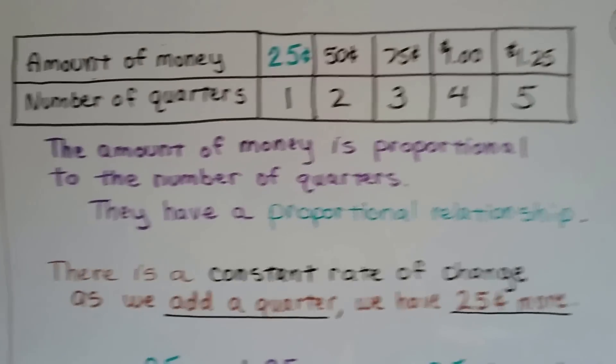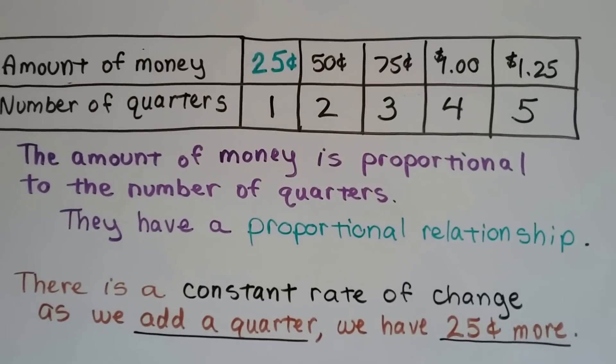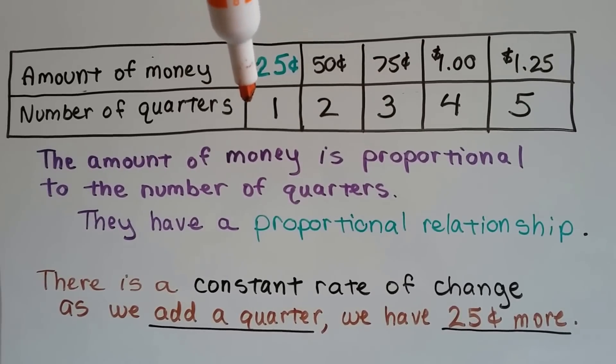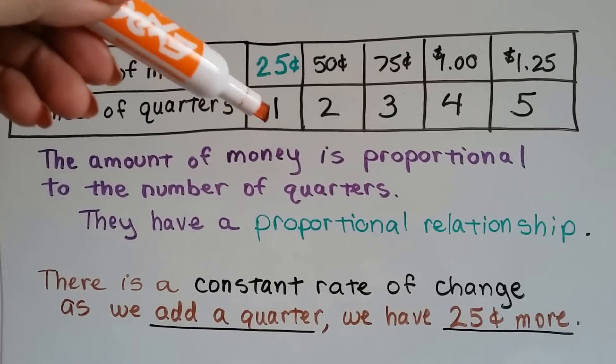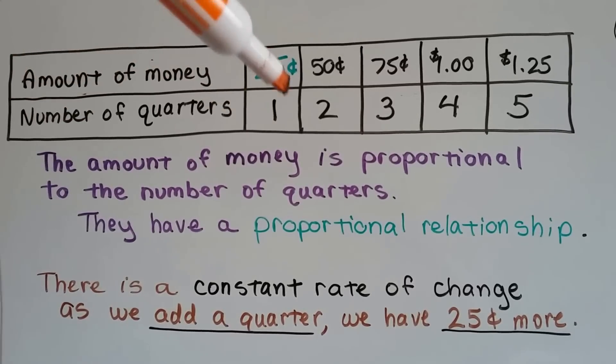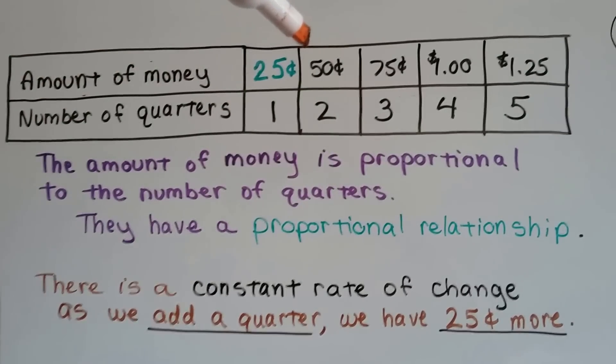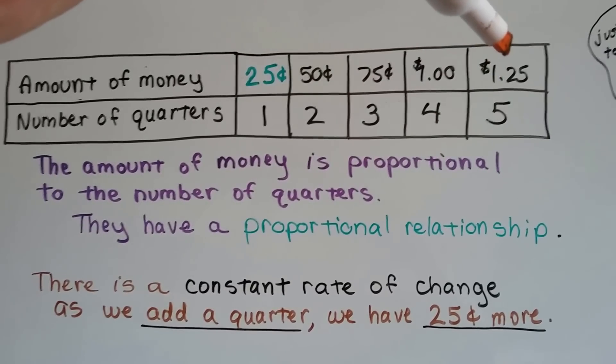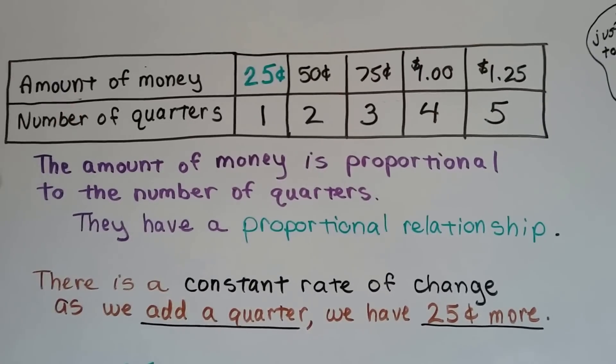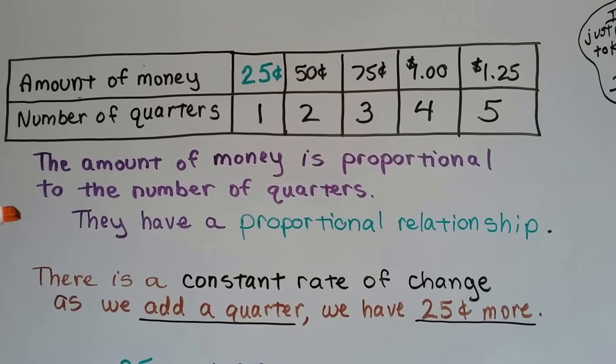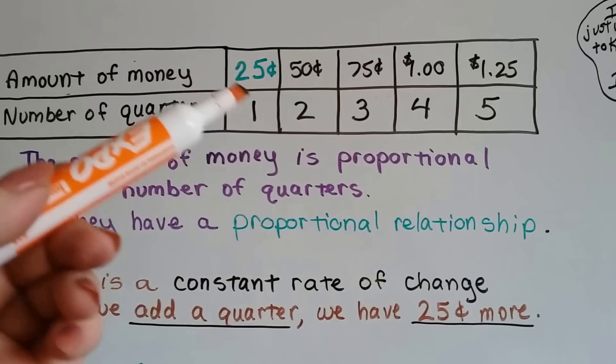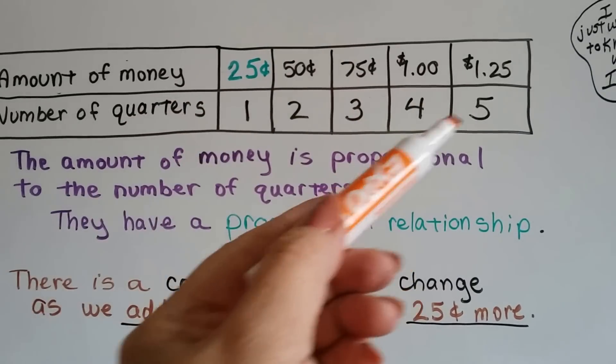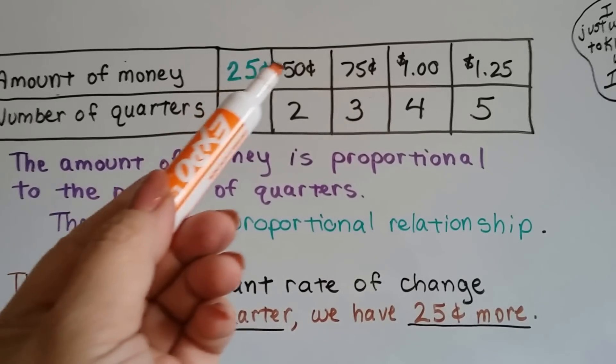Here's another example. We compare the amount of money to the number of quarters. One quarter is $0.25, two quarters is $0.50, three quarters is $0.75, four quarters is $1, and five quarters is $1.25. The amount of money is in proportion to the number of quarters. As the number of quarters goes up, the amount of money goes up proportionally with a constant rate of change of $0.25.